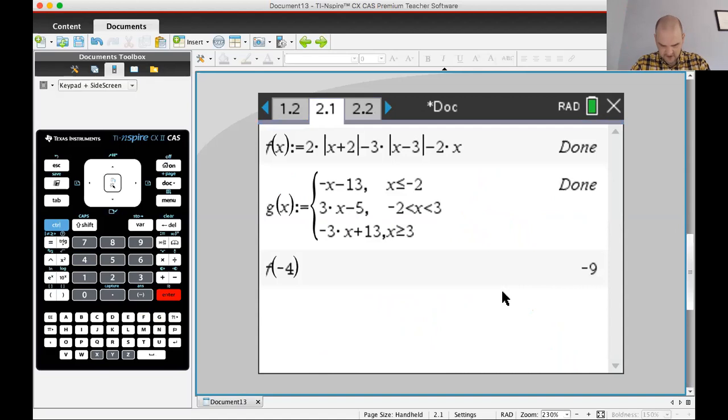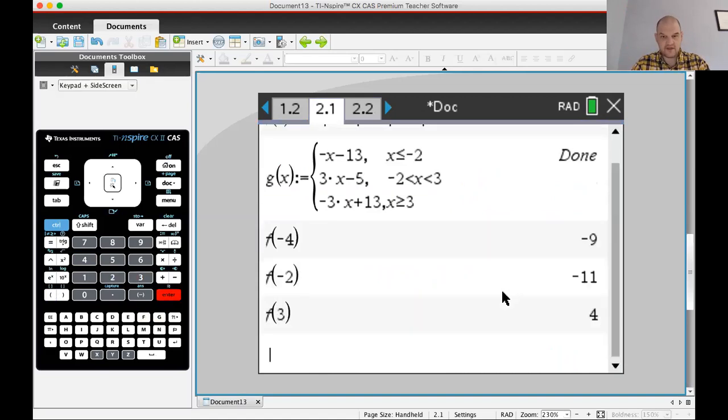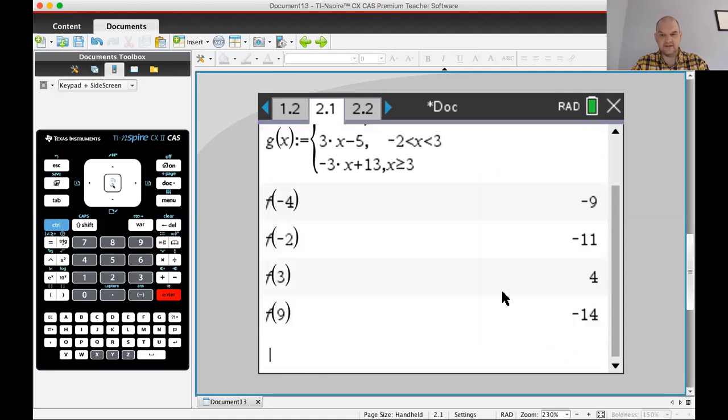Let's use the calculator to figure out the value. So f of negative 4, f of negative 2, f of 3, f of 9. So negative 9, negative 11. And then I'll go back to the notes and I will correctly write up my summary.